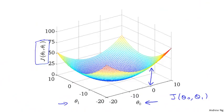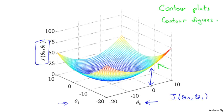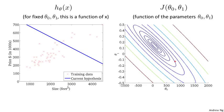For the purpose of illustration in the rest of this video, I'm not actually going to use these 3D surfaces to show you the cost function j. Instead, I'm going to use contour plots, or what are also called contour figures. Here's an example of a contour figure where the axes are theta 0 and theta 1. Each of these ellipses shows a set of points that takes on the same value for j of theta 0, theta 1.